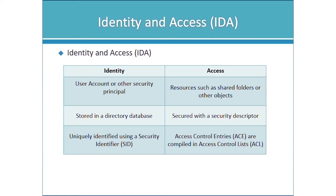When accessing shared folders or files on an NTFS file system, resources are secured with a security descriptor — better known as an ACL, an Access Control List. The ACL is a compilation of individual entries called ACEs — Access Control Entries — which identify an identity and the level of permission on that particular resource. The directory database stores the identities; security descriptors are stored on the resources. Collectively, the two ensure only authorized users have access.